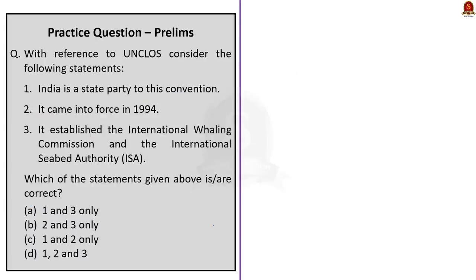Moving on to the last question: three statements regarding UNCLOS are given and we have to find which are correct. The first statement — India is a state party to this convention — is correct. The second statement — it came into force in 1994 — is also correct, as we saw in the discussion. The third statement — it establishes the International Whaling Commission and the International Seabed Authority — is also correct. Since all three statements are correct, the correct answer is option D, one, two and three.